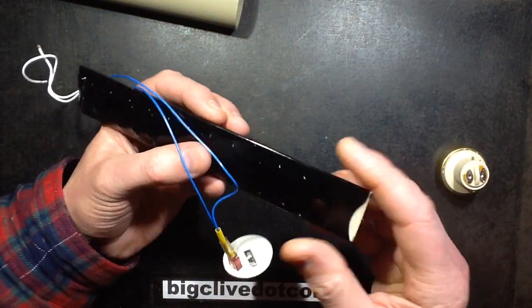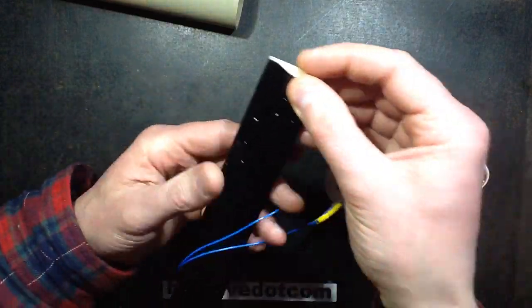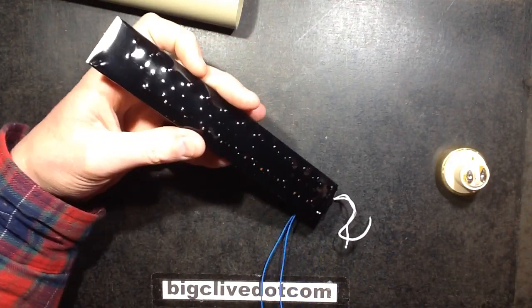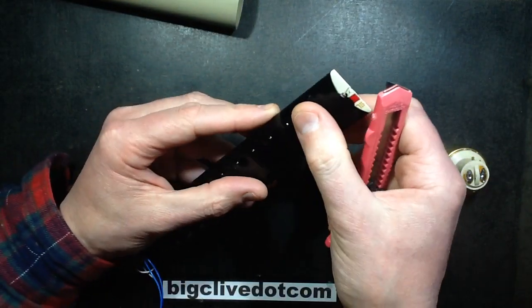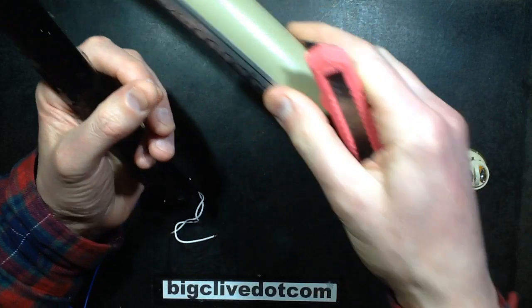Let's get this plastic sleeving off. This is heat shrink sleeving but it's a fairly shiny, hard, plastic-y stuff. Let me find a sharp knife. I can see already it's a standard Mountain Breezy type capacitors.